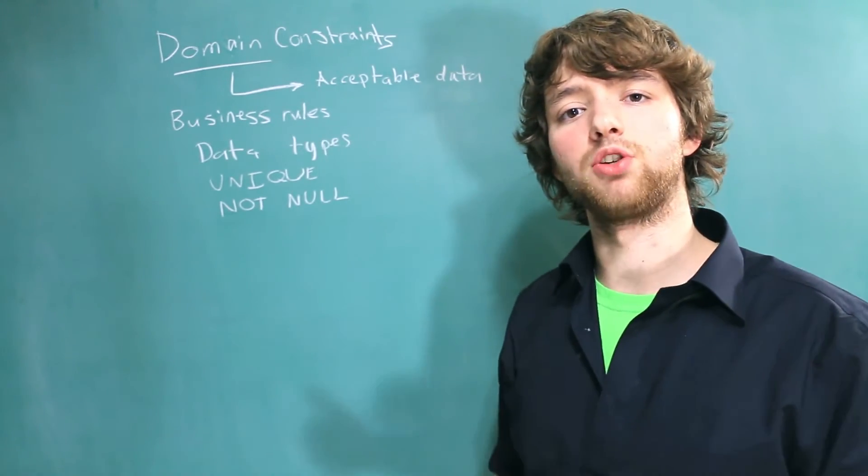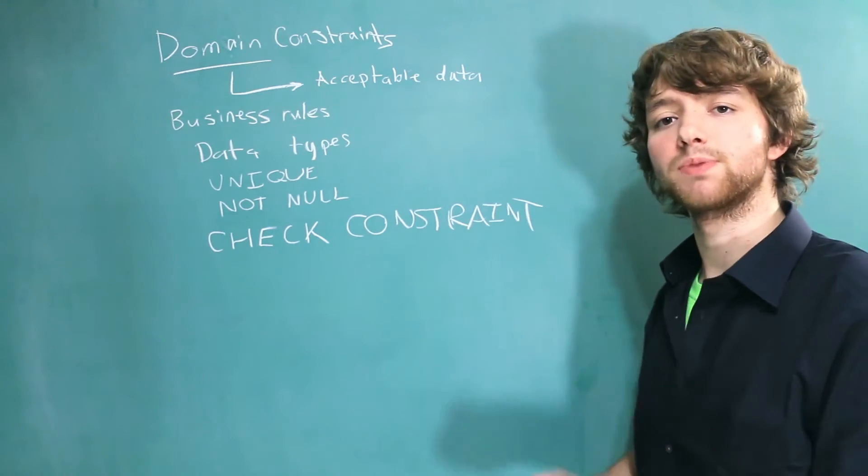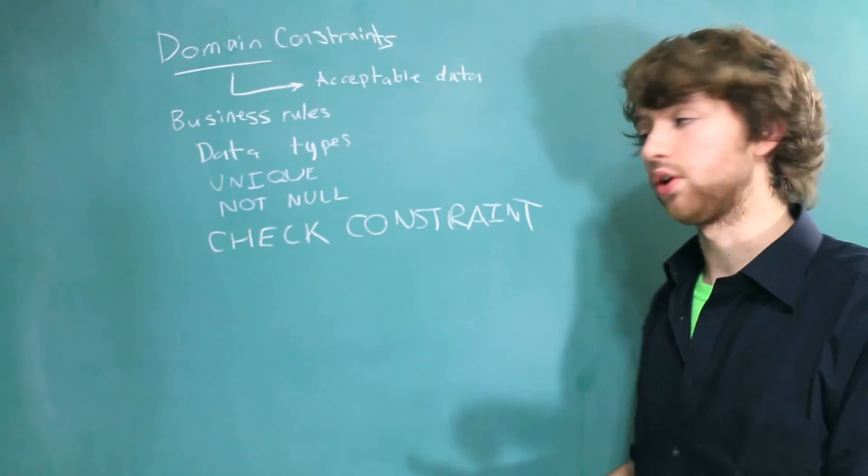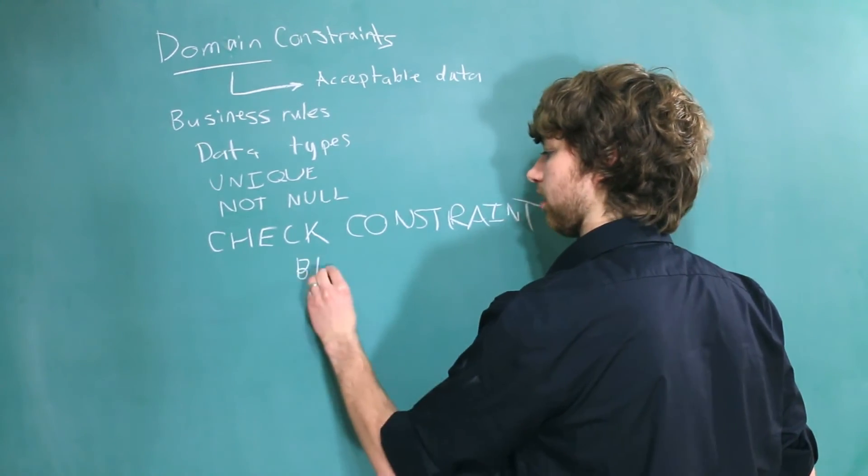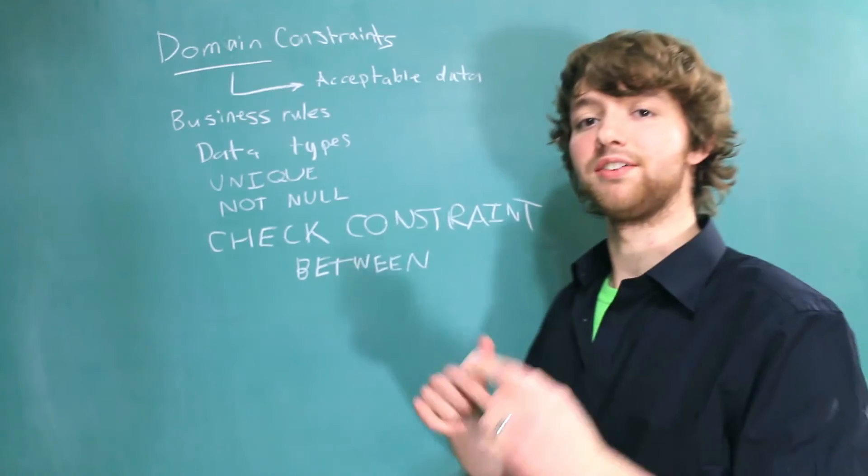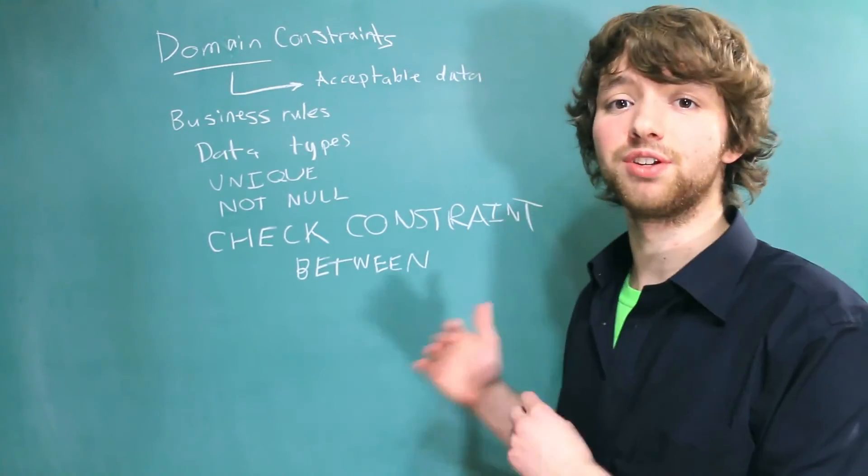But SQL server has something known as a check constraint. Now, a check constraint allows us to be very specific on the data that is allowed. So this allows us to do things like between. And then you can satisfy your boss by restricting the data to be between two certain numbers. And that's really super cool.